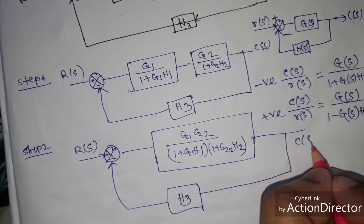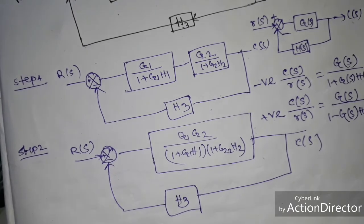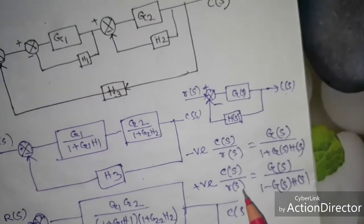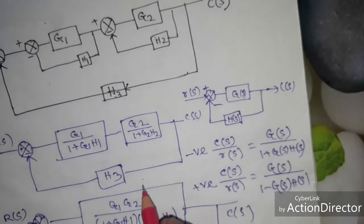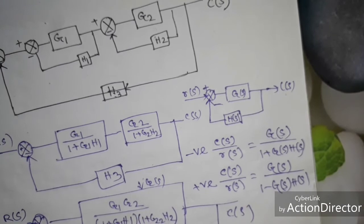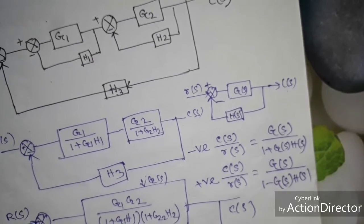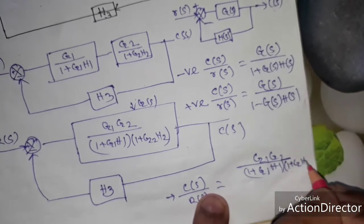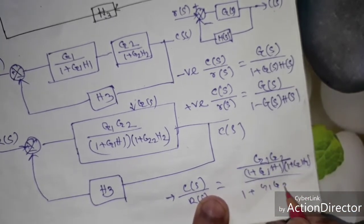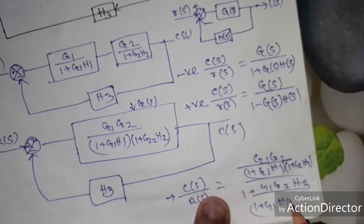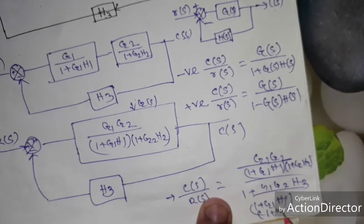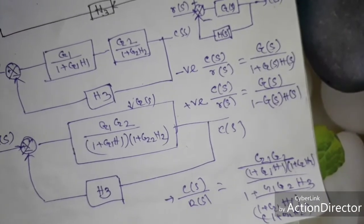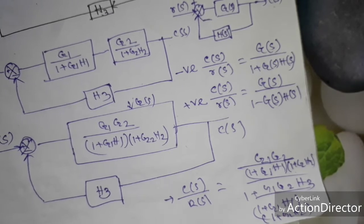Now this is a negative feedback system. We can find the transfer function: C(s)/R(s) = G(s) / (1 + G(s)·H(s)). Substituting, the final transfer function is C(s)/R(s) = G1·G2 / [(1 + G1·H1)(1 + G2·H2) + G1·G2·H3·(1 + G1·H1)(1 + G2·H2)]. If you want to simplify this equation you can do so easily. We have found the transfer function of the system using block diagram reduction technique.